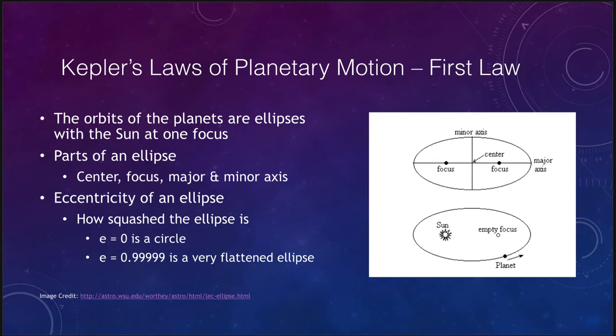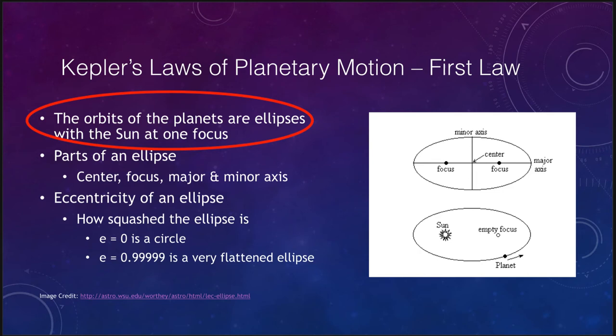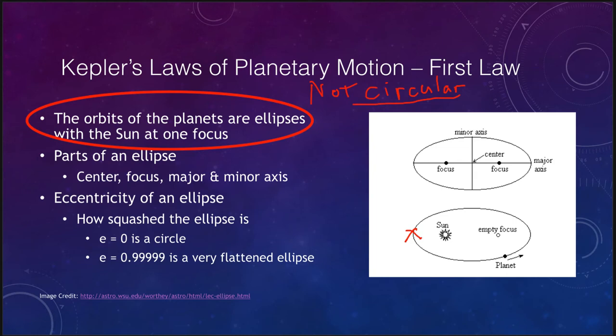Kepler's first law of planetary motion says that the orbits of the planets are ellipses with the Sun at one focus. This was the first time this had been established — not circular orbits, but elliptical. An ellipse is kind of a squashed circle. While a circle has just a center, an ellipse has two foci — one focus on each side. The Sun is located at one focus; the other is empty. That means as the planet orbits around the Sun, sometimes it's closer to the Sun and sometimes it's further away.